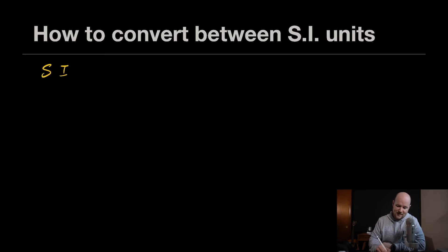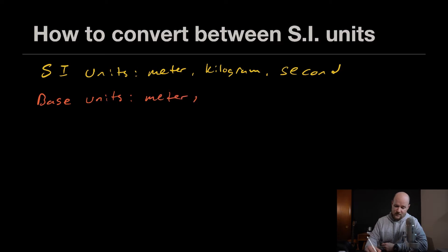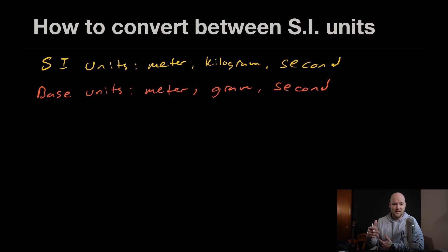So we just talked about all the different SI units, and those units are the meter for length, the kilogram for mass, and the second for time. Now your base units are different than your SI units. Your base units are what the SI system is based around. So your base units are very similar to the SI units. It's still the meter, but it's the gram and the second. So really only the kilogram and gram are different.